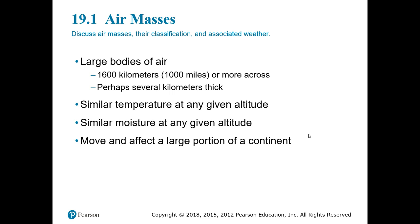Air masses are defined as large bodies of air. An air mass is considered one air mass because it has similar temperature at different altitudes and similar moisture content at any given altitude. Air masses affect a large region or portion of the continent and because they have notably different characteristics from other air masses, that causes interactions between them that lead to predictable weather patterns.